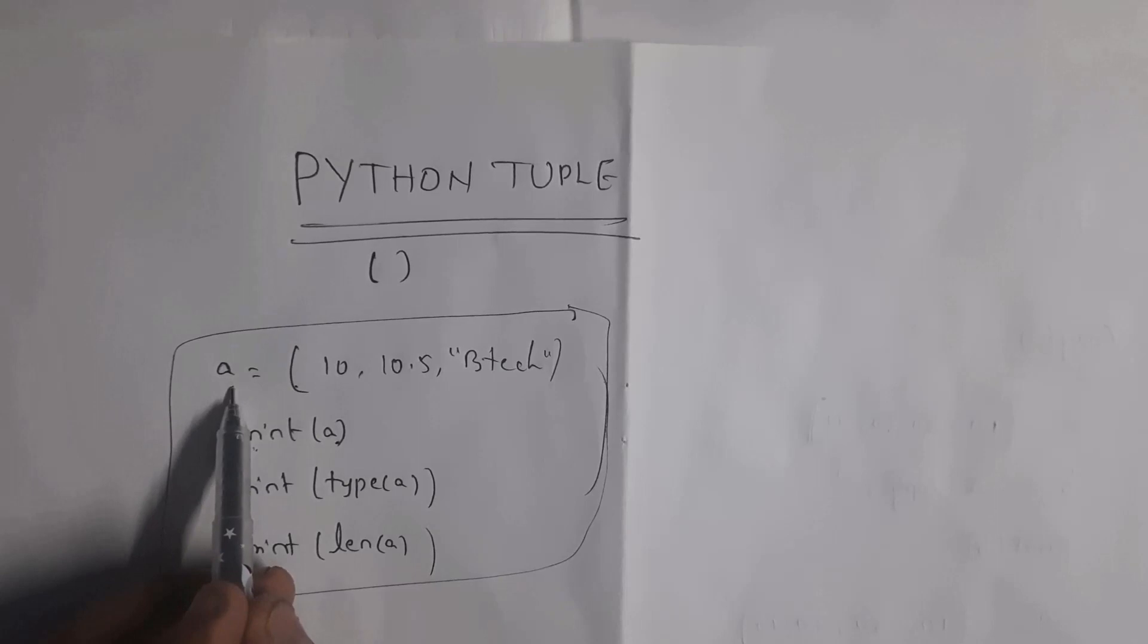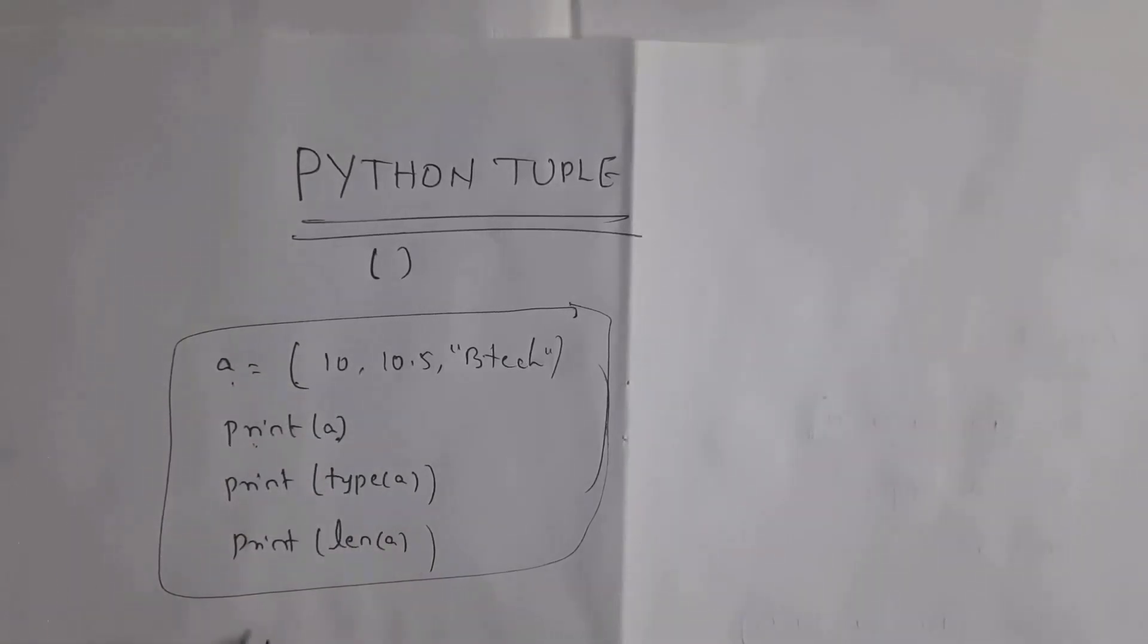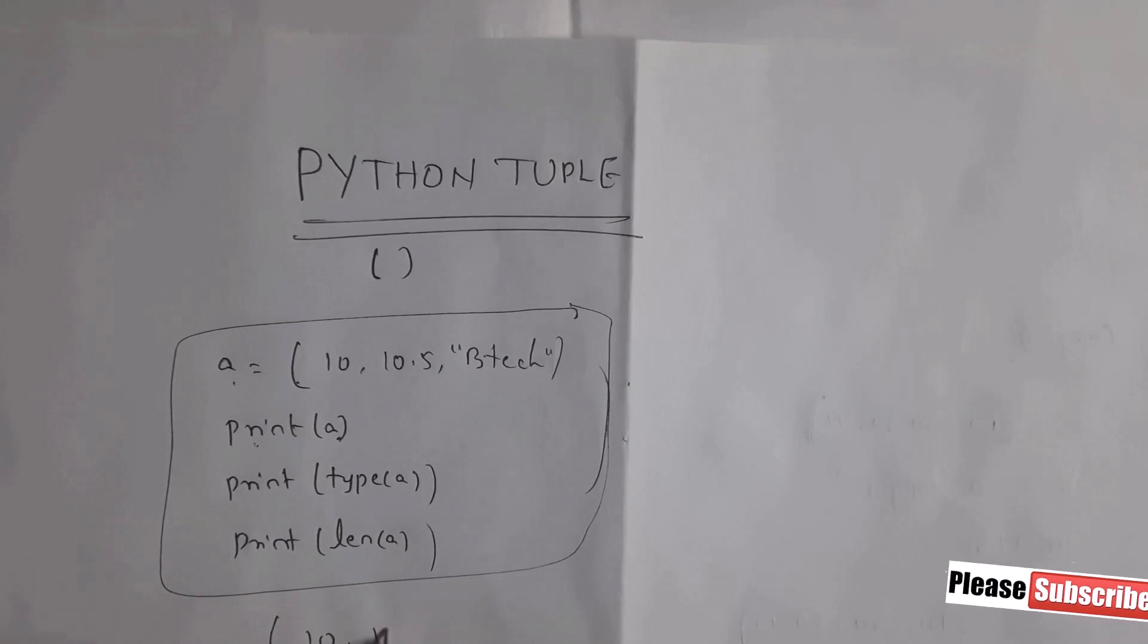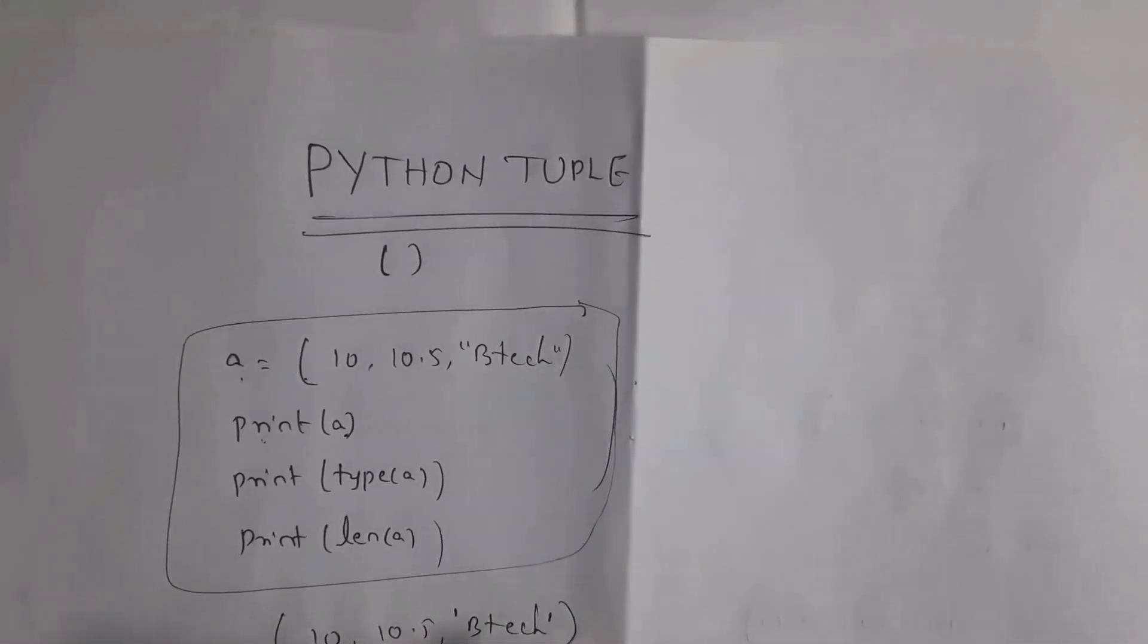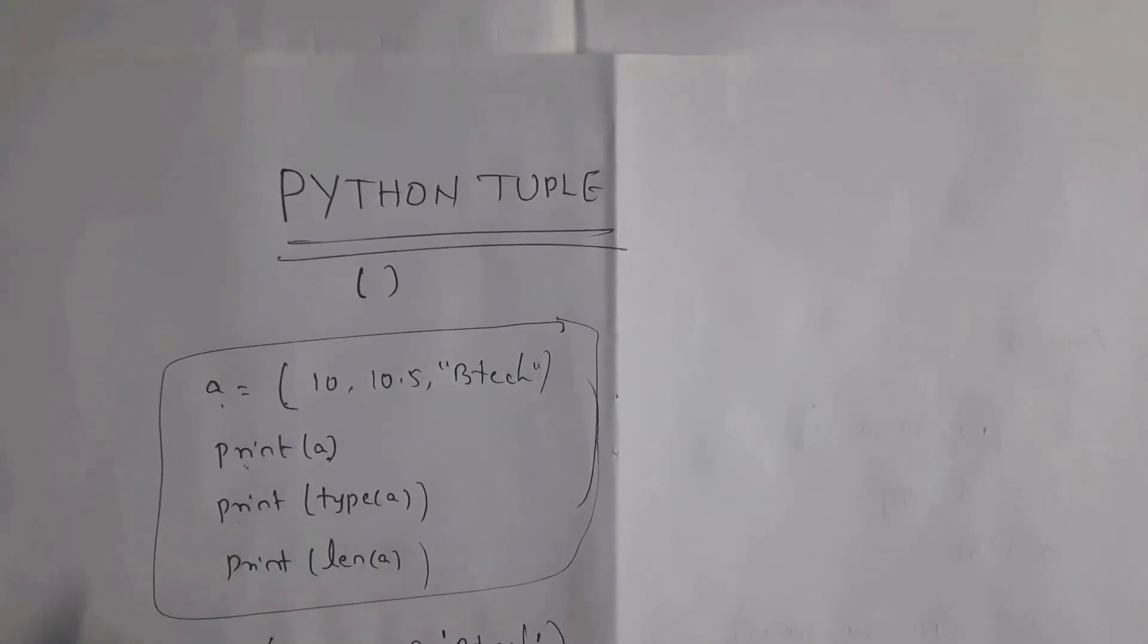Variable a contains tuple, so it will display output 10, 10.5, 'btec' where btec is in single quotations in normal brackets. This is my output. Next I written print type of a. Type function is used to display data type. Here I am using normal brackets, so I will get output class tuple.